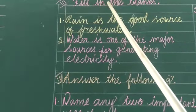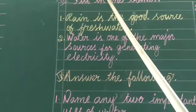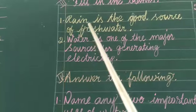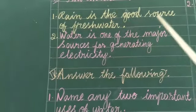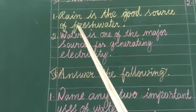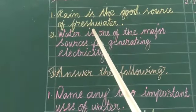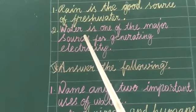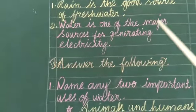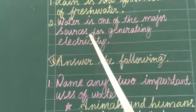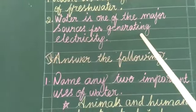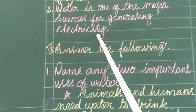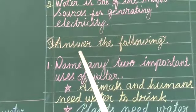Fill in the Blank. First one: Rain is a good source of fresh water. Next: Water is one of the major sources for generating electricity.